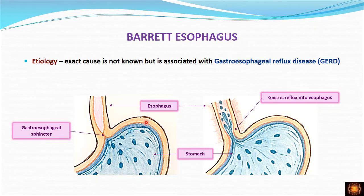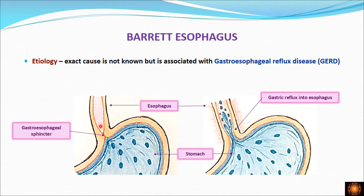Normally, when we take food, the bolus passes through the esophagus and the lower esophageal sphincter relaxes, allowing the bolus to pass into the stomach. Once it passes into the stomach, the sphincter closes very tightly so that the gastric contents do not reflux back into the esophagus — they remain within the stomach itself.